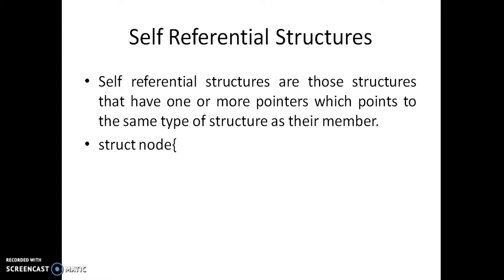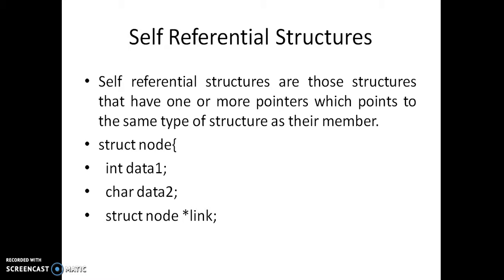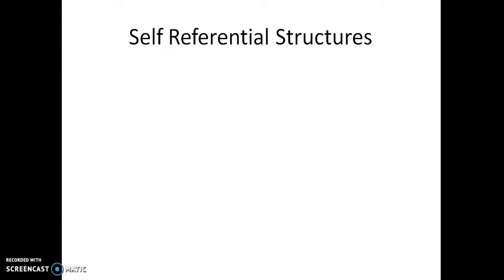Let us look at an example. We are creating a struct and the name of the struct is node. It has members data1, data2, and when we look at the third member, this member is of type node — it is a pointer to the type node. We call this a self-referential structure because it points to the same type of structure.